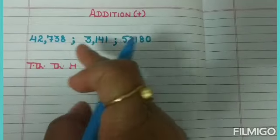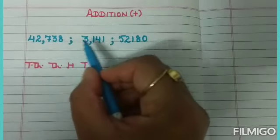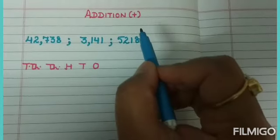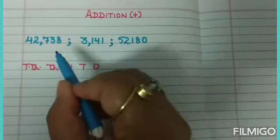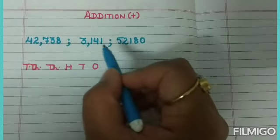Now look at this question. There are three numerals: 42,738; 3,141; and 52,180. We will arrange these numerals from right side to left.